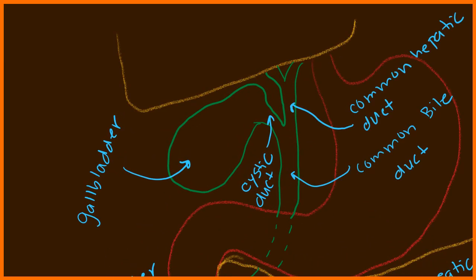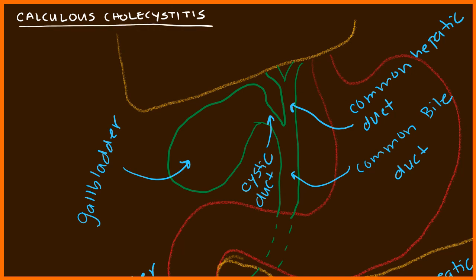Let's discuss the pathophysiology of calculous cholecystitis. Calculous cholecystitis refers to inflammation of the gallbladder secondary to a gallstone. What happens is the liver makes bile as it typically does, and this bile drains into the gallbladder, where you have a reservoir of bile — which is the normal function of the gallbladder.